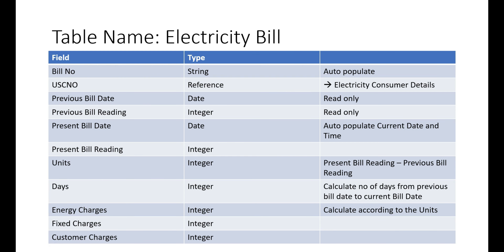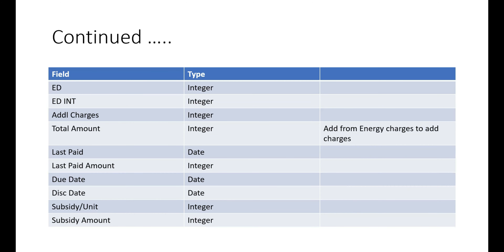Present bill date is the current date — automatically populated when the record is created, saving the current date and time. That logic needs to be written in the backend. Present bill reading is manually entered. Units consumed is calculated as present bill reading minus previous bill reading — this logic also needs to be written, making it read-only. Days is calculated from previous bill date to present bill date — how many days have passed — also requiring backend logic.